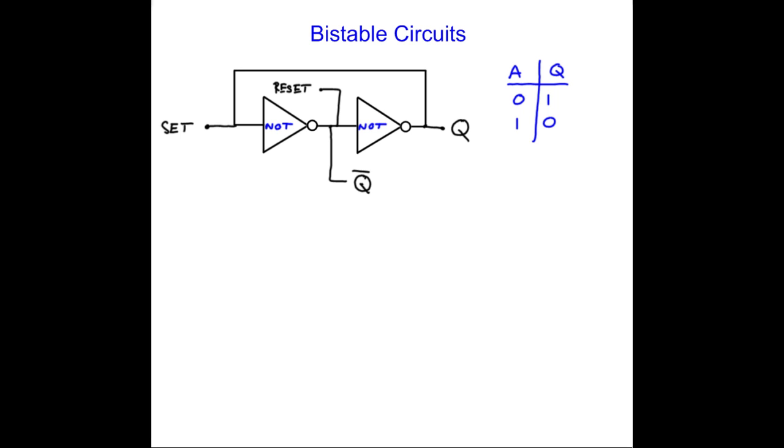Let's see how it works. So we'll arbitrarily start off with the output Q being the value of 0, which means that this value 0 is fed back along this loop here. So the input to the first NOT gate is 0, and therefore Q bar is 1, this point just here is 1, and therefore the output is 0. Everybody's happy. 0 gives 1, 1 gives 0.